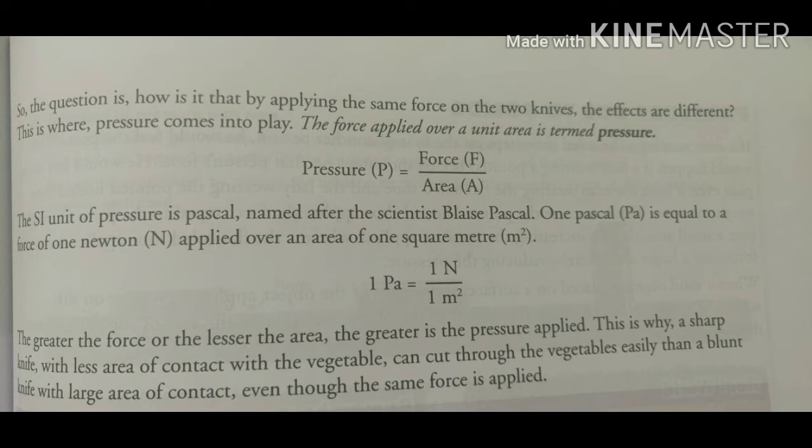The force applied over a unit area is termed as pressure. So here you can see, what is pressure? Force per unit area, means force upon area. Is it clear? And the SI unit of pressure is pascal. And here the force is in a perpendicular direction. So pressure is equals to force upon area. Area is in the denominator.